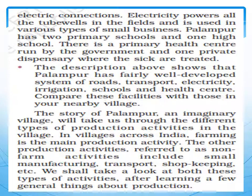The story of Palampur, an imaginary village, will take us through different types of production activities. Across villages in India, farming is the main production activity. Other non-farming activities include small manufacturing, transport, and shopkeeping. So there are farming activities and non-farming activities, and we shall take a look at both these types.